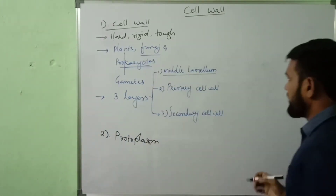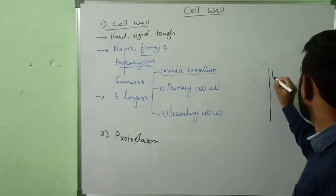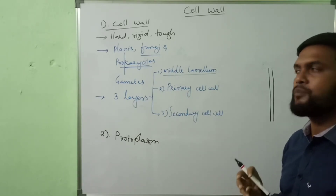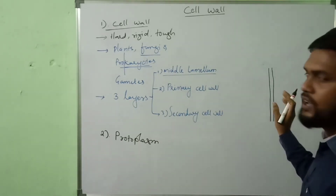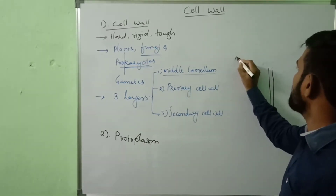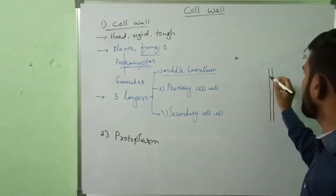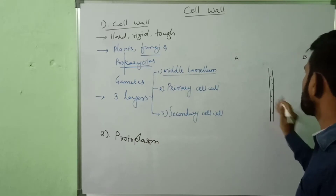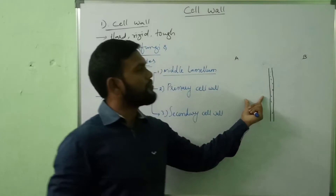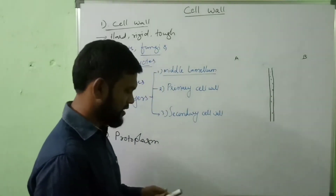Middle lamella is a cement-like substance which is present between two adjacent cells. For example, this is cell A and this is cell B — middle lamella is present between these two adjacent cells. This lamella helps in the formation of tissues.